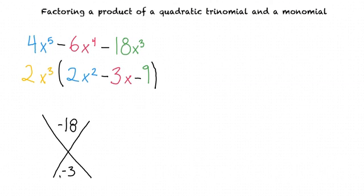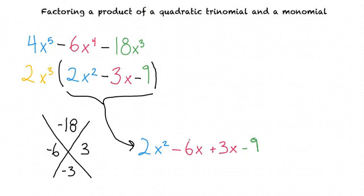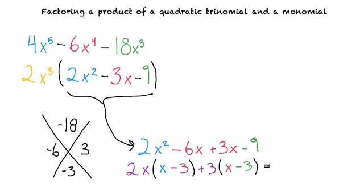Two factors that multiply to negative 18 and add to negative 3 are negative 6 and positive 3. We can rewrite our quadratic equation as 2x squared minus 6x plus 3x minus 9. The greatest common factor of these first two terms is 2x, so I'll factor that out. And the greatest common factor of these second two terms is 3, so I'll factor that out. Now we can factor out x minus 3 from both of these terms to see that this original quadratic equation can be rewritten as x minus 3 times 2x plus 3.